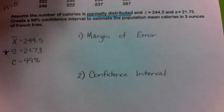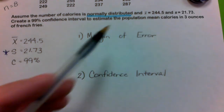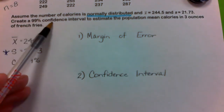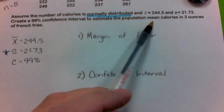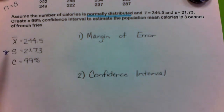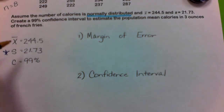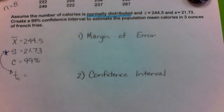Here is an example. Assume the number of calories is normally distributed. X bar is 244.5, S equals 21.73. Create a 99% confidence interval to estimate the population mean calories in three ounces of French fries. Notice the star by S — the key in Chapter 7 is recognizing when sigma is known versus unknown. Since sigma is unknown and we're using S, I'm going to find T sub C using the Student's T distribution.